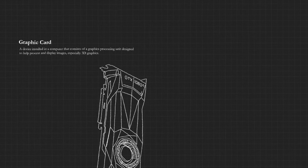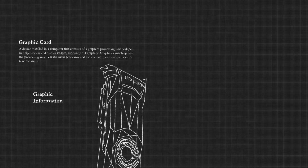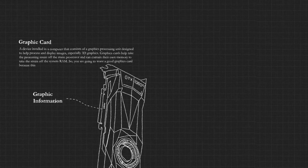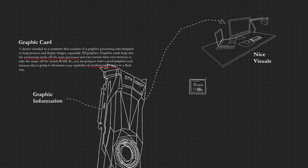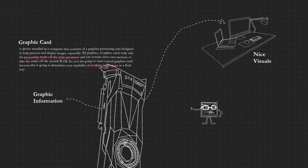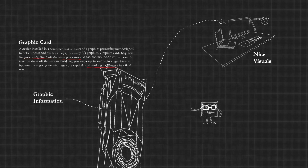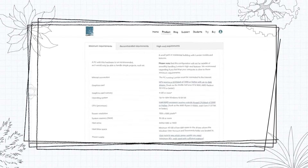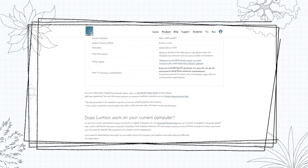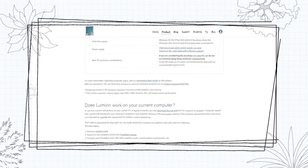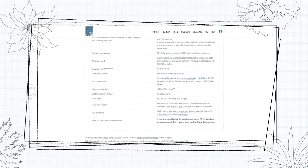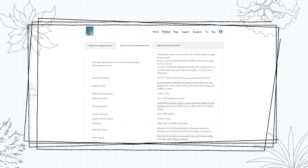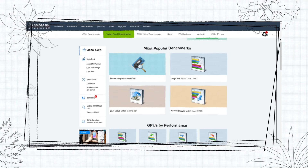Now let's talk about graphics cards. A graphics card is a device installed in a computer with a graphics processing unit designed to help process and display images, especially 3D graphics. It takes processing strain off the main processor and has its own memory to take strain off the system RAM. You want a good graphics card because it determines your capability to work in 3D space fluidly. I like to guide myself by the Lumion standards — they publish technical requirements each year as upgrades bring new trees, features, and materials.